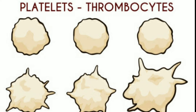The blood also has white blood cells, WBCs, which fight against germs that may enter our body. A clot is formed because of the presence of another type of cells in the blood called platelets.